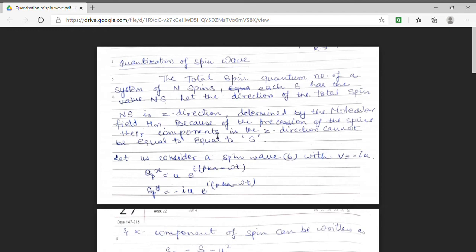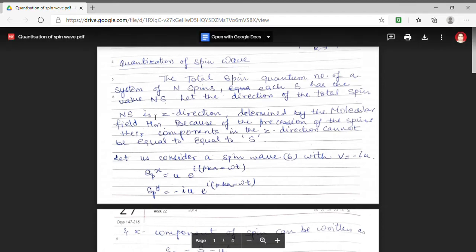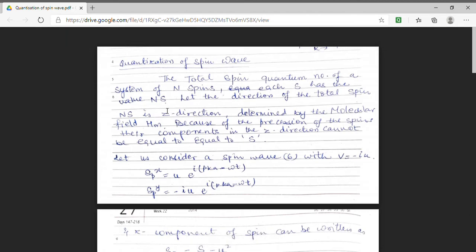Now in our today's lecture, we will discuss the quantization condition of these spin waves. For this purpose, I am taking a system in which the total number of spin quantum number is N. If I have to find the resultant spin, then I am taking the magnitude of each spin to be capital S. So the total spin quantum number will be capital N multiplied by S. Let the total spin is along the Z direction.